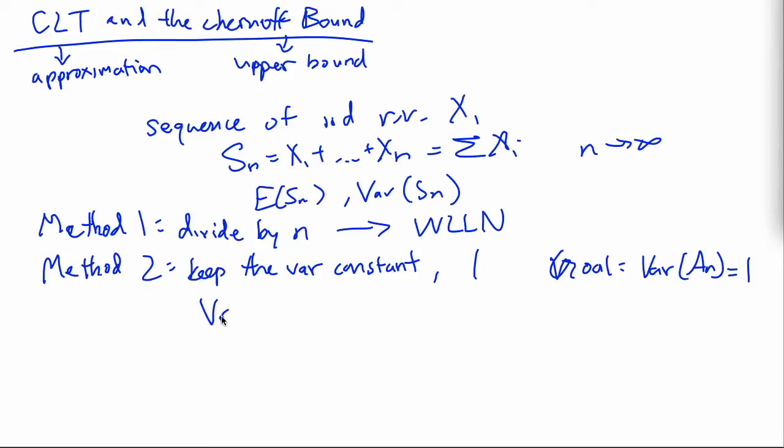Recall that variance of kS equals 1 over k squared times the variance of S. And we know the variance of S is n sigma squared, so you want 1 over k squared n sigma squared to be 1. So k squared is n sigma squared and k is sigma square root of n. So we actually got our factors.